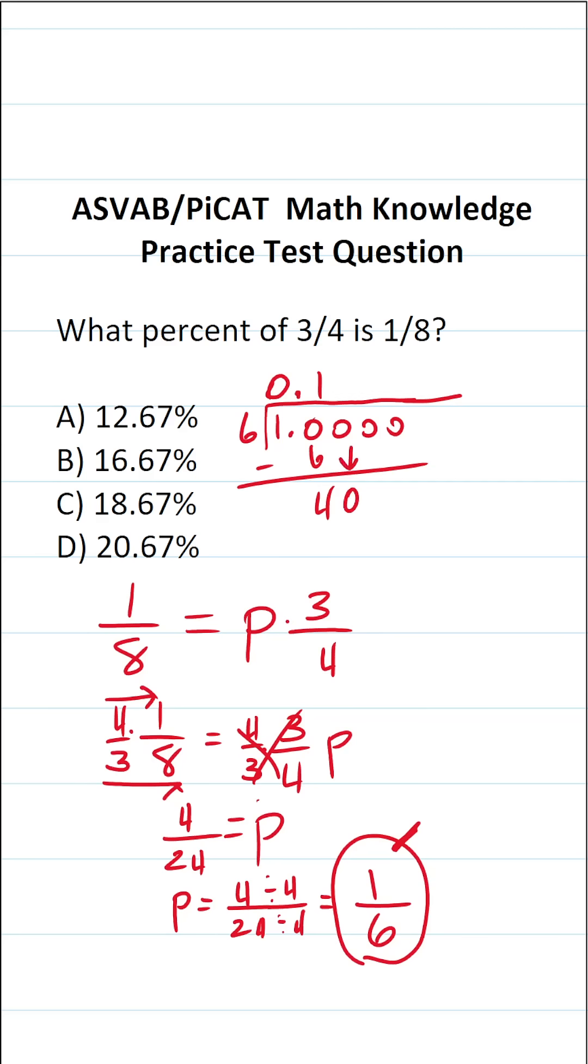How many times does six go into forty without going over? It's going to be six times. Six times six is thirty-six. Forty minus thirty-six is four. Drop down one of our zeros.